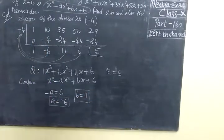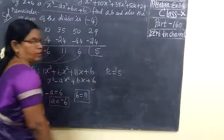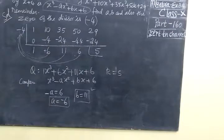Now we check the answer. A equals -6 and B equals -11. Remainder is 5. So the answer is correct. Thank you.